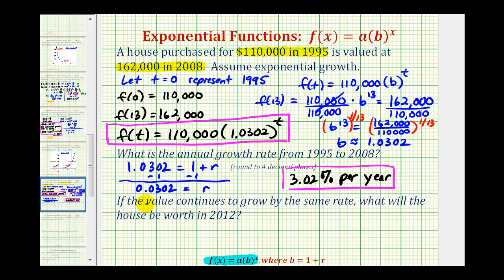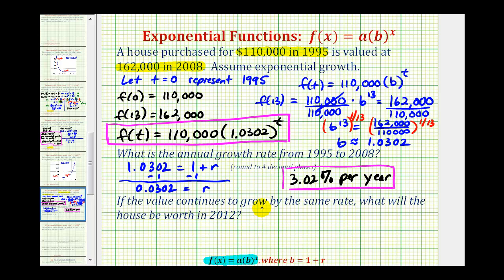And now for the last question, if the value continues to grow by the same rate, what will the house be worth in the year 2012? The first step here is to determine the value of t for the year 2012. Well, t is going to be equal to the desired year of 2012 minus the base year of 1995. So this is going to be equal to 17. So to answer this question, we need to find f(17).